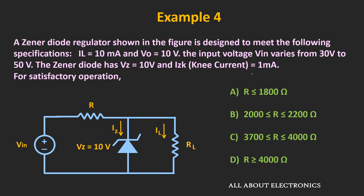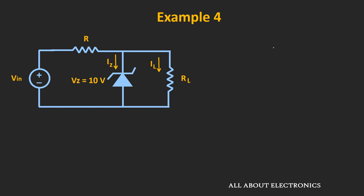Now let's move to the next example. A Zener regulator circuit is designed to meet these specifications: load current Il = 10 mA, output voltage Vout = 10V, and input voltage Vin varying from 30V to 50V. The Zener diode has Vz = 10V and knee current Izk = 1 mA. We need to find the value of R for proper voltage regulation.